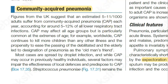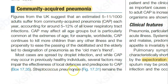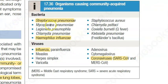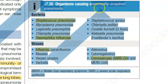Hello people. In this video let us look at community acquired pneumonia. It is mostly caused by Streptococcus pneumoniae, but not just bacteria — even viruses can cause community acquired pneumonia. Remember Streptococcus, Staphylococcus, Haemophilus influenzae, and viruses like influenza and coronavirus can all cause community acquired pneumonia.